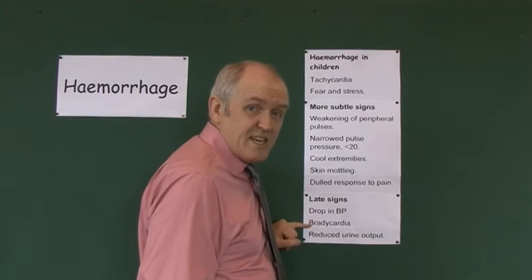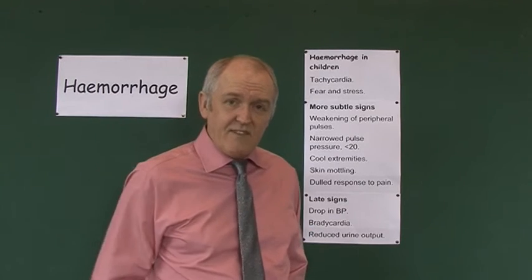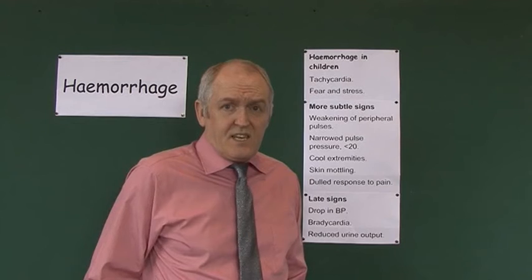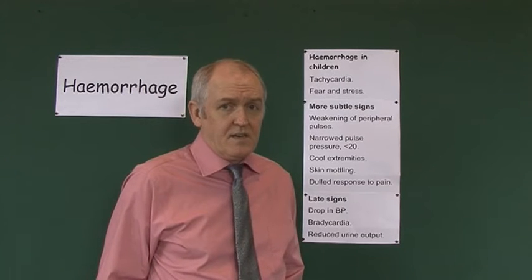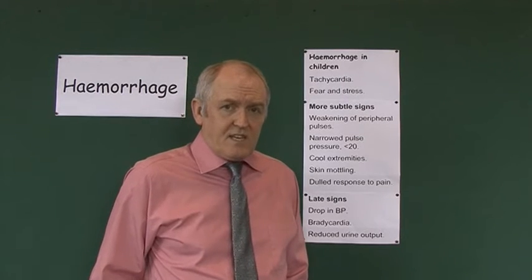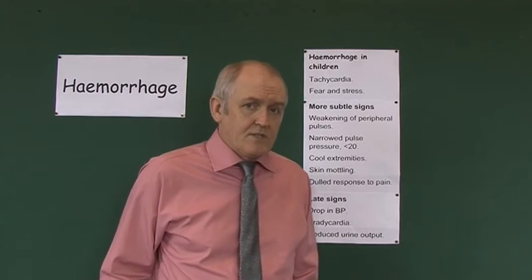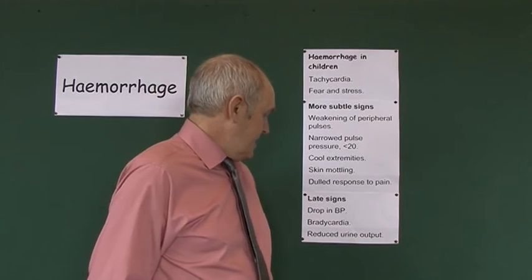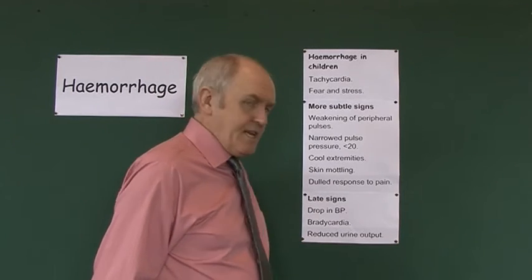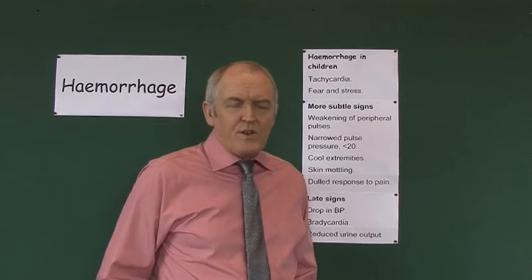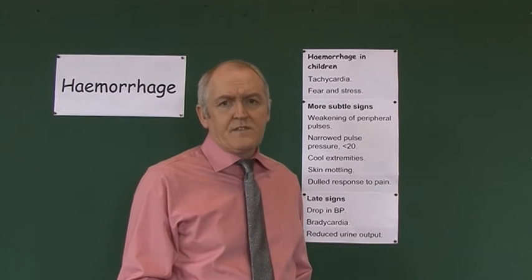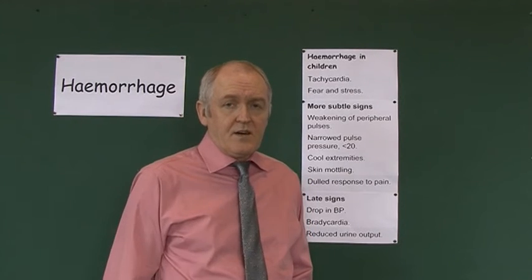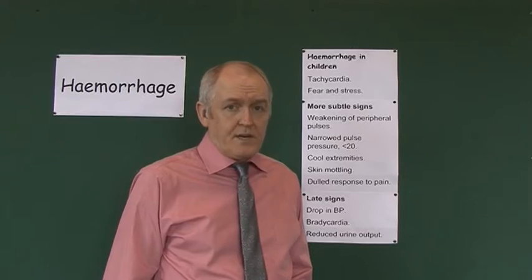Bradycardia is even worse — it's an even later sign. You could say bradycardia is a pre-terminal sign, and if you don't treat the child at the bradycardic stage, you haven't got much time left to save their life. Finally, reduced urine output — you're probably not going to see this acutely, but with more prolonged haemorrhage the child can become oliguric.